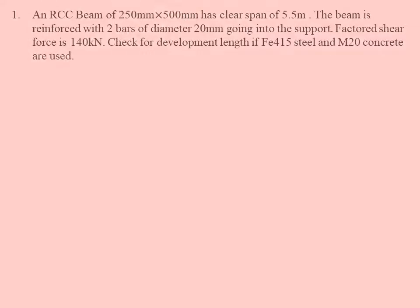This is the first question. An RCC beam of 250 mm by 500 mm, that is the breadth and the depth, has a clear span of 5.5 m. The beam is reinforced with two bars of diameter 20 mm going into the support. Factored shear force is 140 kN. Check for development length if Fe 415 steel and M20 concrete are used.